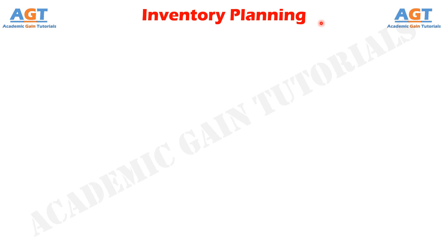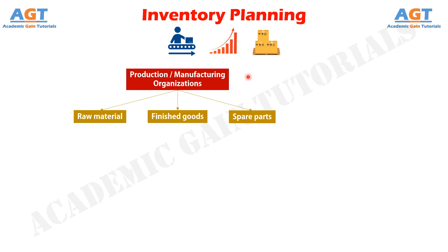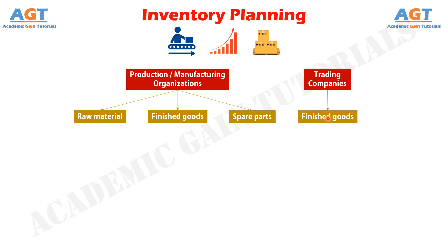Every organization engaged in production, sale, or trading of products holds inventory in one form or another. While production and manufacturing organizations hold raw material inventories, finished goods, and spare parts inventories, trading companies might hold only finished goods inventories depending upon the business model.